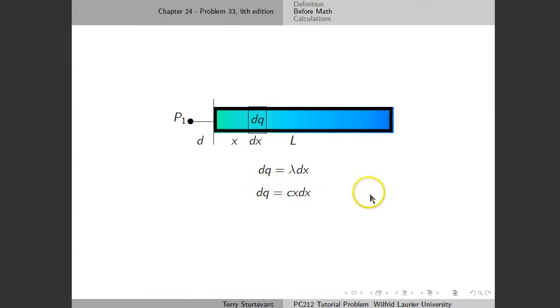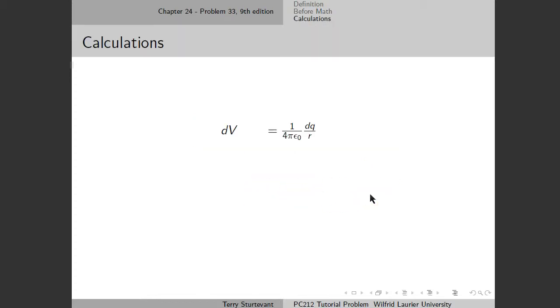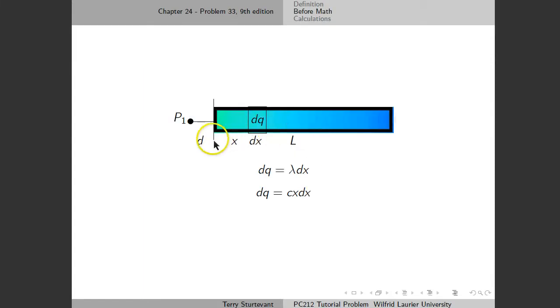So dq is cx dx. When we set up the integral like this, then we replace dq with cx dx, and the distance r is the distance from here to point P, which is d plus x.